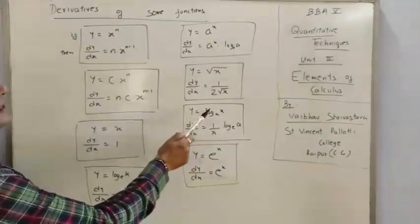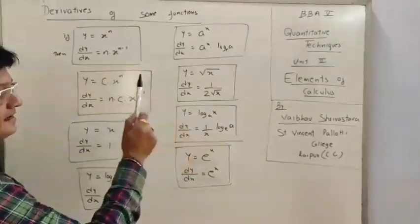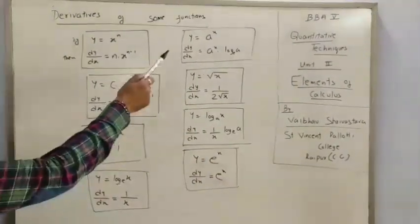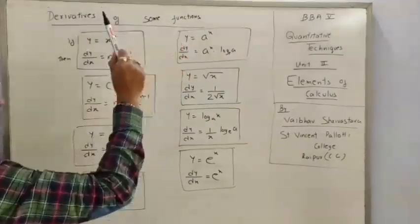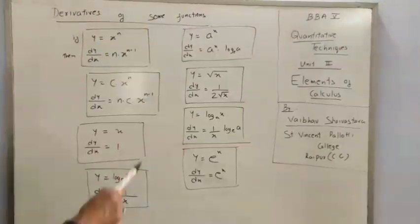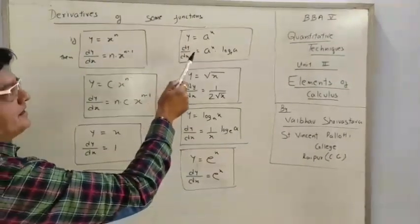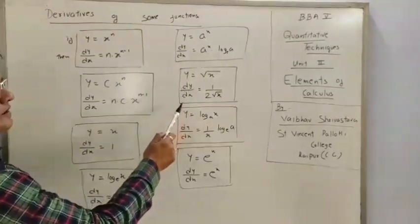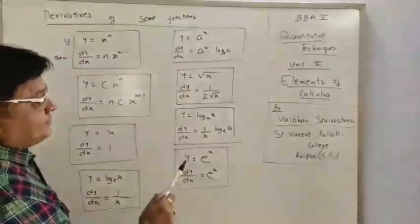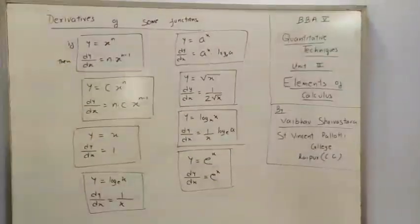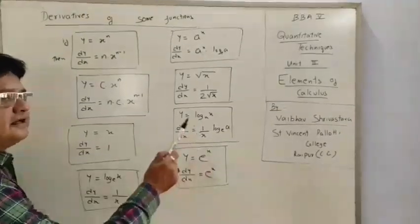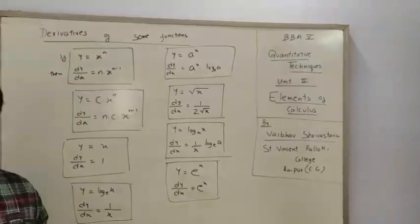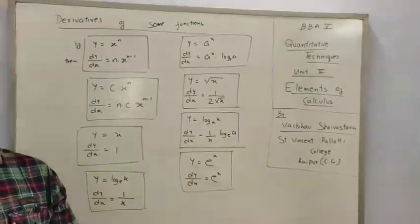If Y = log X to base A, then its derivative dy/dx = (1/X)·log(A) to base e. And if Y equals any constant to the power X — that is, Y = A^X where X is the power — then dy/dx = A^X · log(A) base e. If Y = √X, then dy/dx = 1/(2√X). If Y = e^X, it is an exponential constant whose derivative is itself: e^X. These are the general rules of key functions, and other functions will relate to these only.